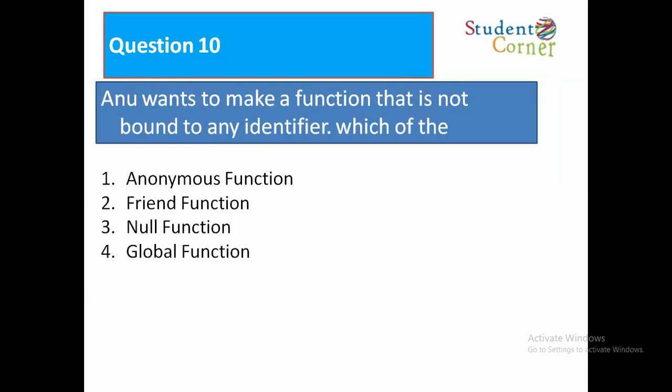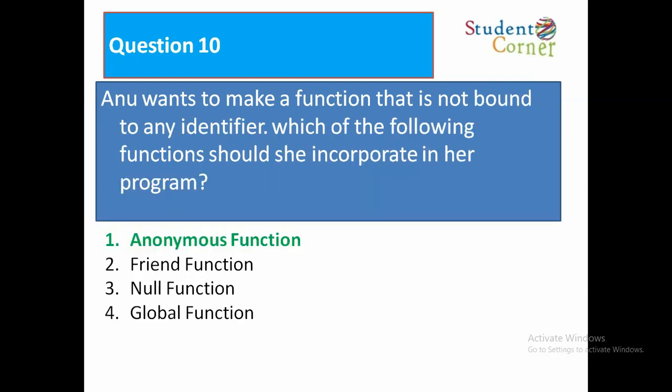Anu wants to make a function that is not bound to any identifier. Option 1: Asynchronous function. Option 2: Friend function. Option 3: Null function. Option 4: Global function. Which of the following functions should she incorporate in her program? Asynchronous function.